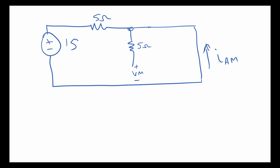Looking at the voltmeter measurement: the voltage at the bottom end of the resistor is the same as at the top end, so V_m is also across that same node. We can see that voltage is across a short circuit, so it has to be zero. Therefore V_m must equal 0 volts. That is our first result.